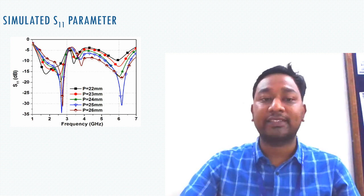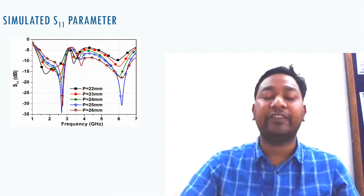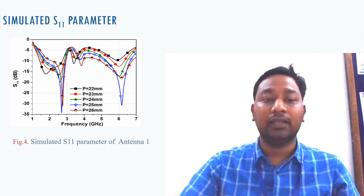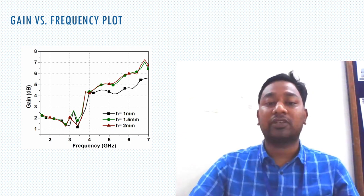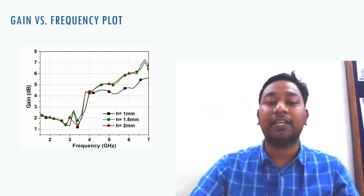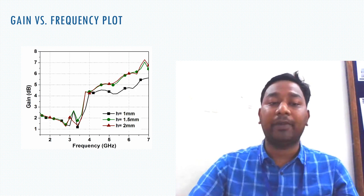Our antenna operates in two frequency regions: one from 1.8 to 2.4 GHz and another from 5 to 6 GHz, and for different feed line lengths the S11 parameter varies. Looking at the gain versus frequency plot, we compared three different substrate heights: h = 1 mm, h = 1.5 mm, and h = 2 mm. For h = 1 mm, the gain is good in the lower band but less in the higher band. The gain versus frequency plot shows how much antenna gain is achieved in each particular band.